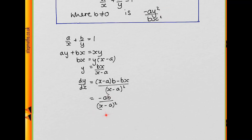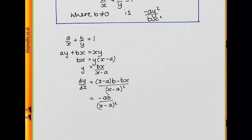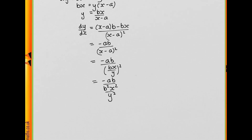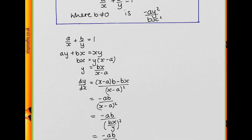But this is not exactly the same as what we're trying to get — we want y in there as well. Noting there's no (x - a) term, we want to find (x - a) in terms of y. From y = bx/(x - a), we can write x - a = bx/y. Substituting, we get -ab / (bx/y)², and squaring and cancelling the b's, moving y² to the top, we get -ay²/bx² as required.